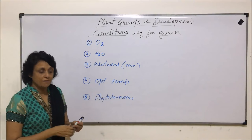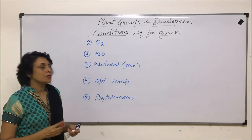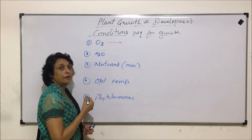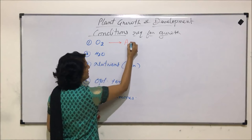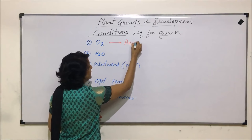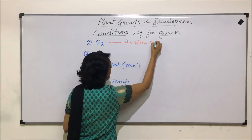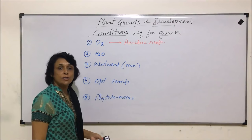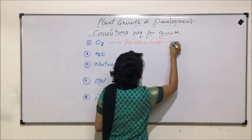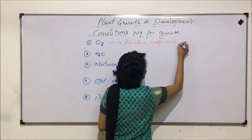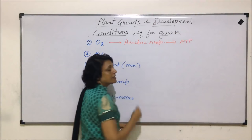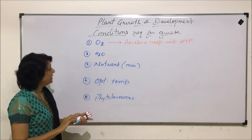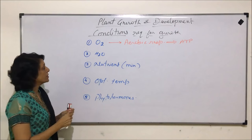Oxygen is required for aerobic respiration, and this aerobic respiration is the process which releases ATP, which is essential for various growth activities or growth processes.